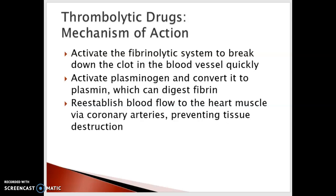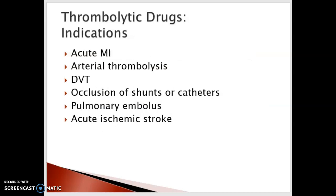We would be very cautious, and there are certain criteria where we would not want to give thrombolytics — for example, in the presence of a hemorrhagic stroke, it would make the situation worse, whereas for an embolic stroke it would be helpful. You will see thrombolytics used with acute ischemic stroke, pulmonary embolism, occlusion of a shunt or cardiac catheter, deep vein thrombosis, arterial thrombolysis, or an acute MI.